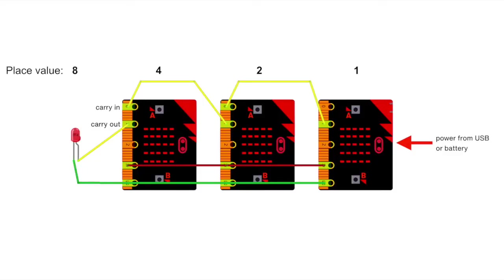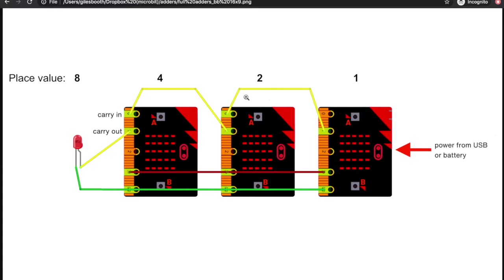Use as many micro:bits as you like — the same code goes on every one. Turn the micro:bits on their side. Pin 1 is the carry out, so connect pin 1 to its neighbour's pin 0 — the carry in — and keep going until you run out of micro:bits. This leaves one carry out left over; if you've got an LED, connect its long leg (the anode) to the final carry out and its short leg (the cathode) to ground. Connect all the ground pins together to complete the electrical circuit. You could power each micro:bit individually from batteries or USB, but I've powered the micro:bit on the right and powered all the others from it by joining their 3V pins together.